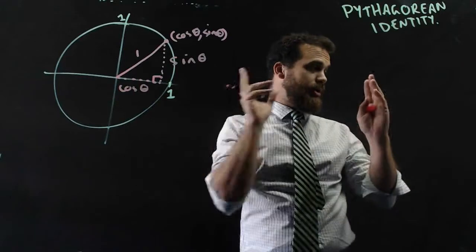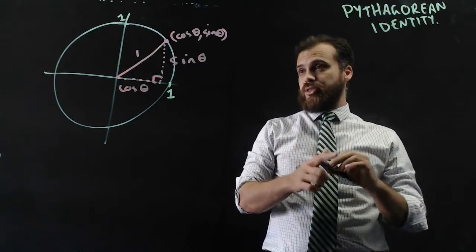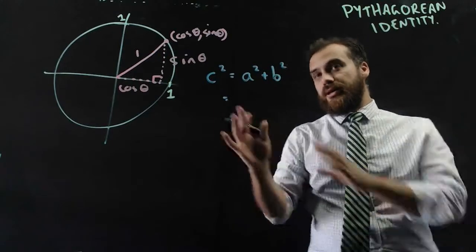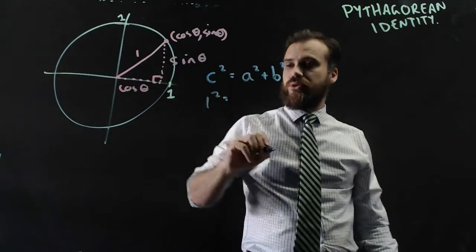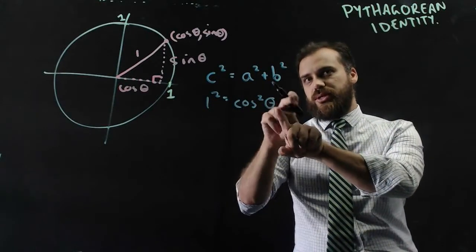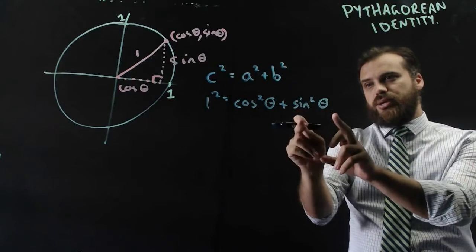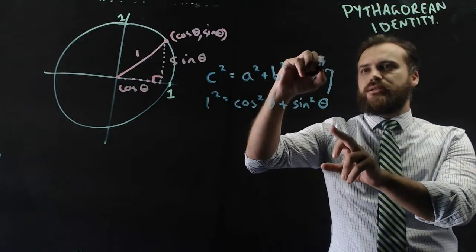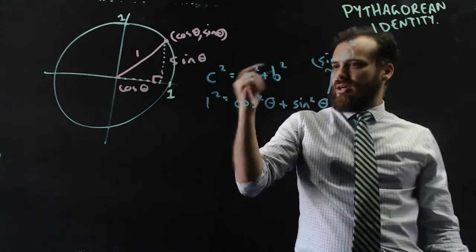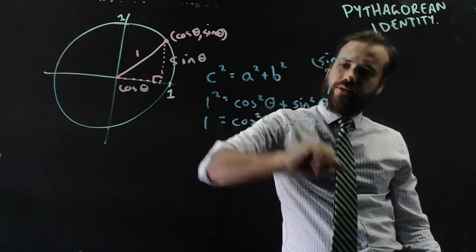Now, we're talking about the Pythagorean identity, so you should be getting a hint that it's going to have something to do with Pythagoras' theorem. We know that Pythagoras' theorem says c squared equals a squared plus b squared. In this particular instance, that means 1 squared equals cos squared theta plus sin squared theta. We write it so often that we don't want to use brackets, so: 1 equals cos theta squared plus sin theta squared.